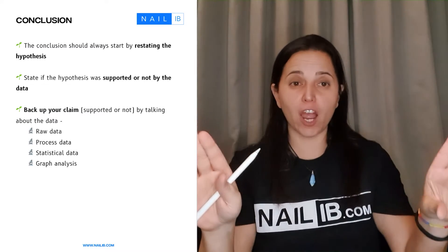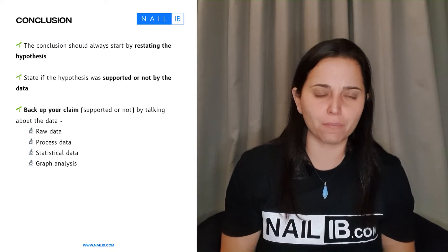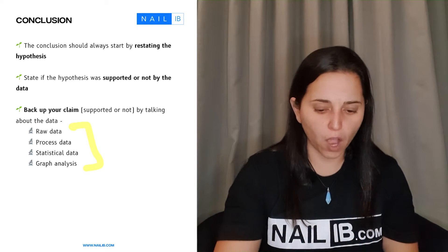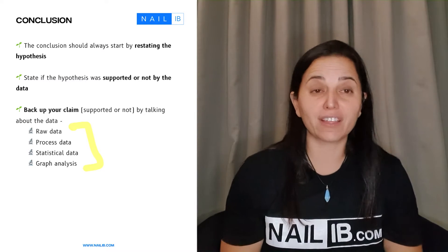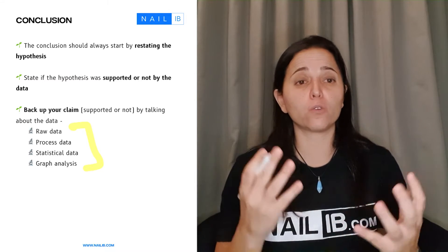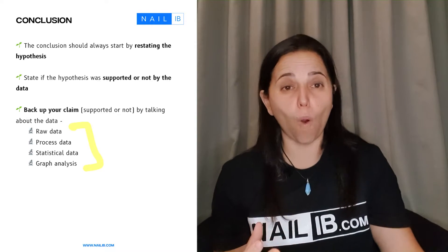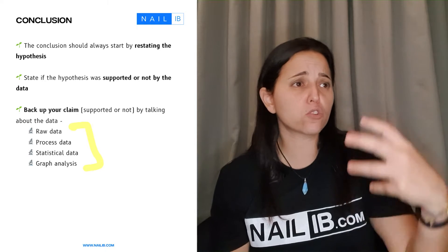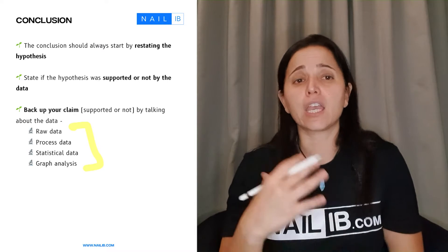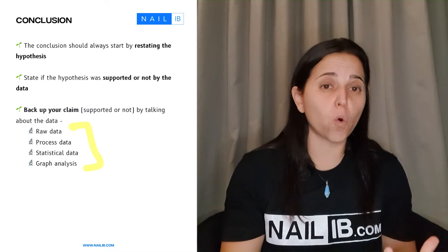Once you mention your hypothesis and state whether it's been supported or not supported, you need to back it up with data. The backup includes your raw data, processed data, statistical data, and graphic analysis data. You compare results across your different independent variables — for example, different temperatures — discussing the averages, and identifying increasing or decreasing trends, positive or negative correlations.